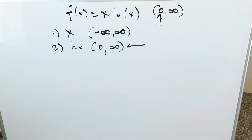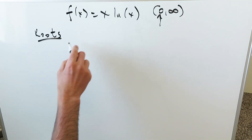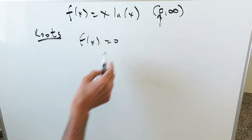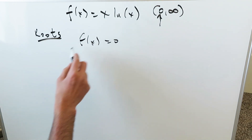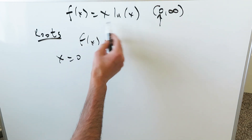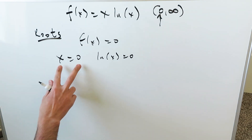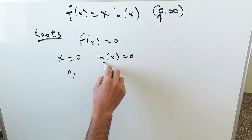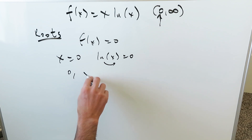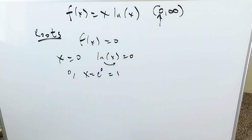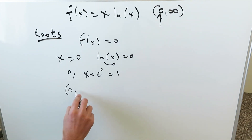When graphing, we must worry about the roots. We set f(x) equal to zero and solve for x. We have two entities: x equals zero, and natural log x equals zero. From x equals zero we get one root at zero. From natural log x equals zero, we push the natural log to the other side: x equals e to the power of zero, which gives us one. These are your x values of the roots.